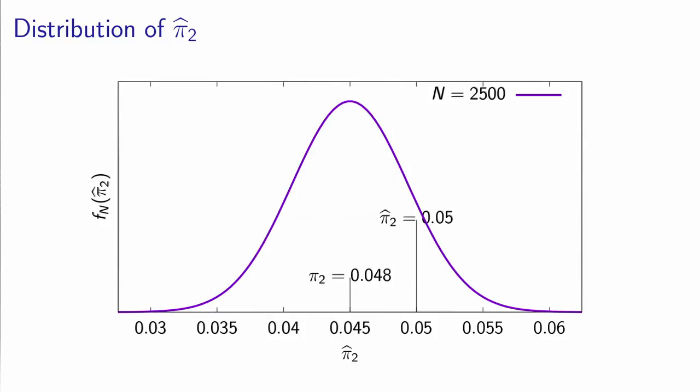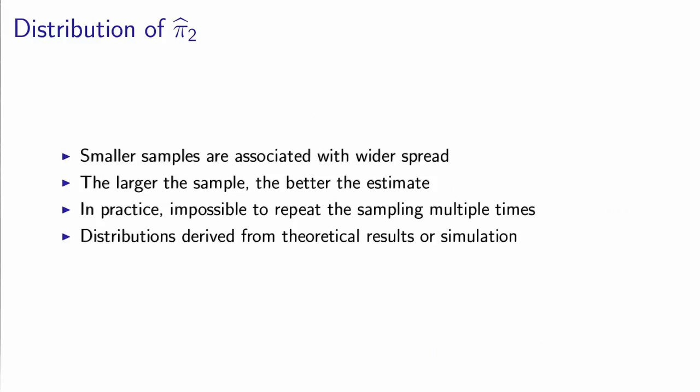In general, all the estimators that we will be using are unbiased or asymptotically unbiased. It means that the true value of the parameter is the expectation of the estimate. Of course, this distribution, we hope that it is not too spread, because if it is spread, we may end up with estimates which are far away from the true value of the parameter. The spread of the distribution is actually associated with the size of the sample. Smaller samples are associated with a wider spread. So the larger the sample, the better the estimate. It's always worth investing in large sample.